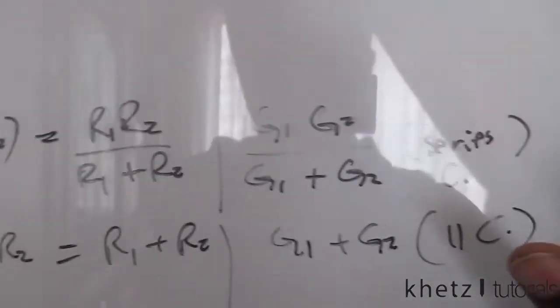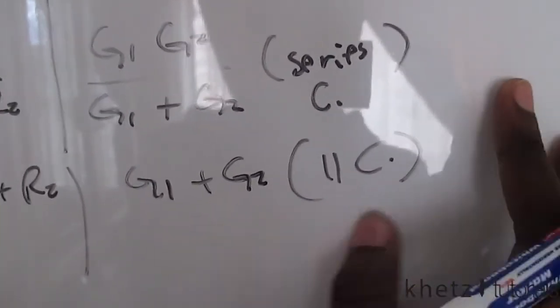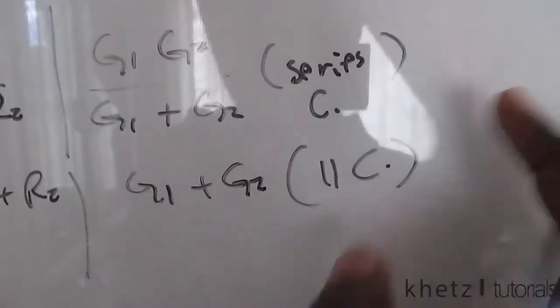If we go back here, if we have parallel conductances, we add. So parallel conductances, we add them, G1, G2.